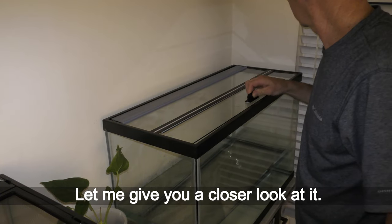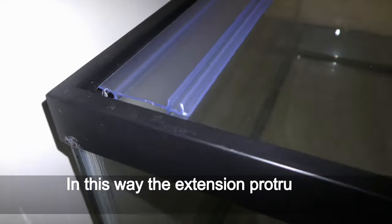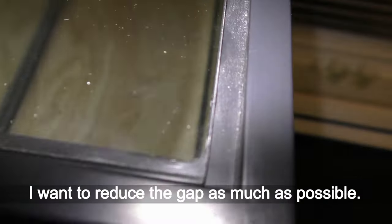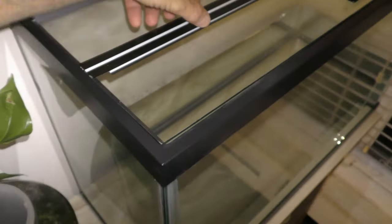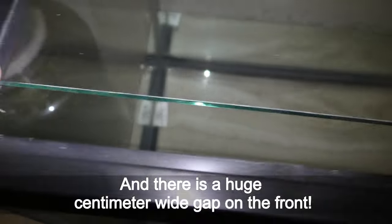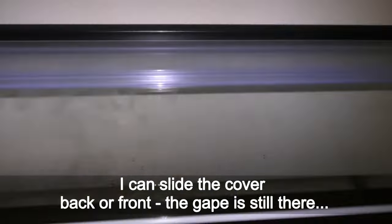Let me give you a closer look at it. In this way, the extension protrudes above the glass level leaving a gap. I want to reduce the gap as much as possible. And there is a huge centimeter-wide gap on the front. I can slide the cover back or front. The gap is still there.